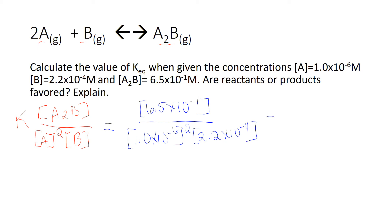So now to solve this problem, all I have to do is multiply across the top, which doesn't change anything—6.5 times 10 to the negative 1. And I'm going to take 1.0 times 10 to the negative 6 squared times 2.2 times 10 to the negative 4th, and I get 2.2 times 10 to the negative 16th. So now I just have to divide the top by the bottom. Be very careful when you enter this in your calculator. Make sure you put it in parentheses first. You want to make sure your calculator isn't trying to divide your exponent by your denominator.